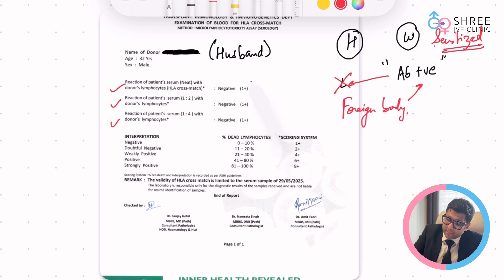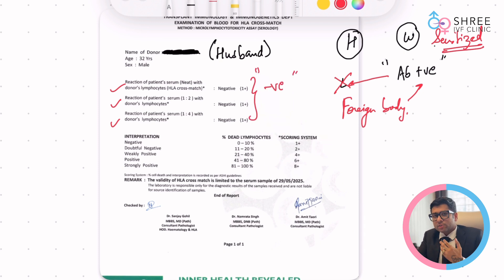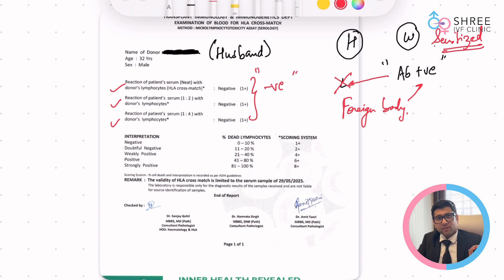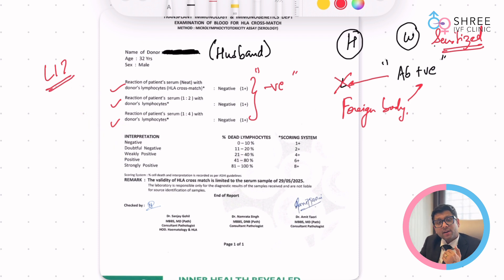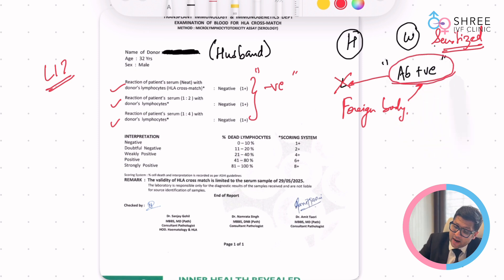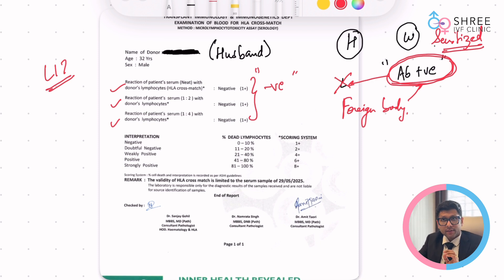If the report is negative, that means there is no sensitization. Because there is no sensitization, we want to induce an artificial sensitization by doing LIT — lymphocyte immunization therapy. When we introduce this artificial sensitization, the antibody becomes positive, and the minute the antibody becomes positive, it becomes protective to the pregnancy. Because the antibody becomes protective to the pregnancy, LIT may go and benefit.